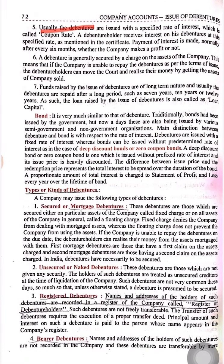Fifth, debentures are usually issued with a specified rate of interest, which is called the coupon rate. A debenture holder receives interest on the debenture at this specified rate, and it will also be mentioned in the certificate. Sixth, the debenture is generally secured by a charge on the assets of the company. If the company fails to pay the amount, that particular asset will be sold off and the debenture holder will be paid. Seventh, funds raised by the issue of debenture are of a long-term nature and will be repaid after a long time, such as seven, ten, or twelve years.